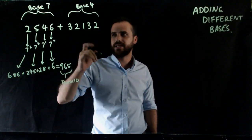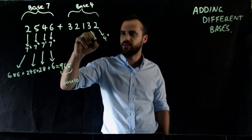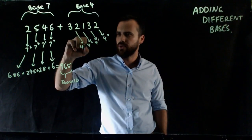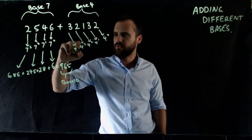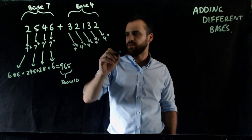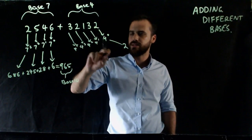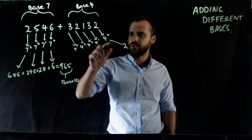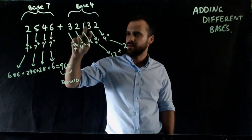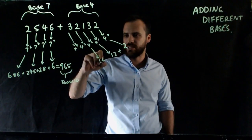Now this one — base 4. Remember, this is going to be 4 to the 0, 4 to the 1, 4 to the 2, 4 to the 3, 4 to the 4. Now this is like the 1s column — 4 to the 0 is 1 — so that's going to be 2. Then 3 fours: 4 to the power of 1 is 4, so 3 fours is 12. Then 1 times 4 squared, which is 16, so 1 sixteen is 16.